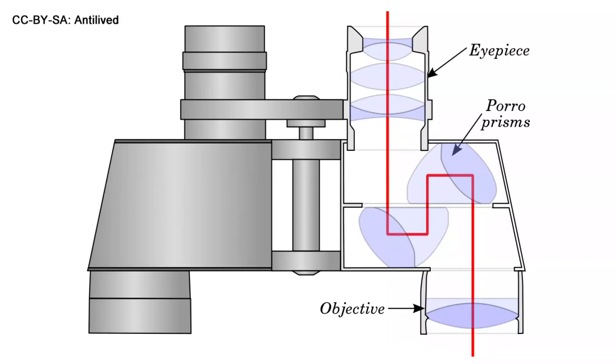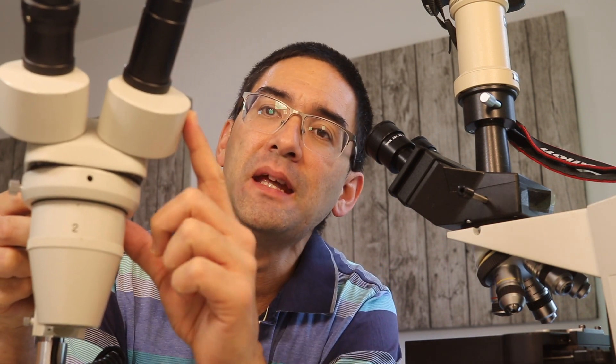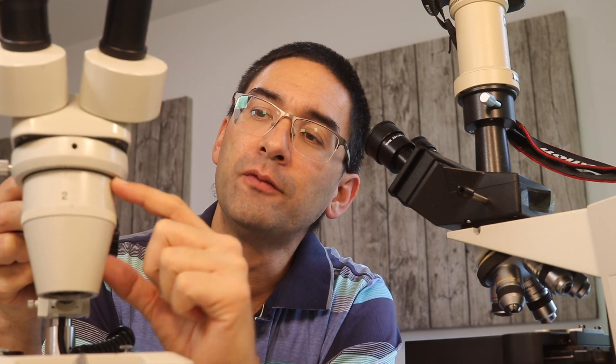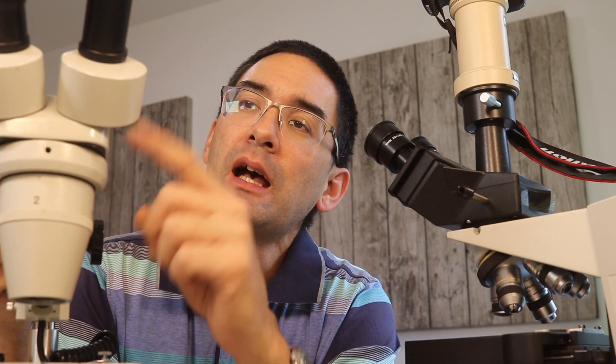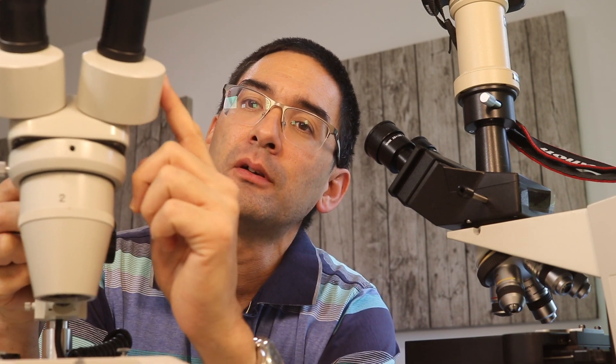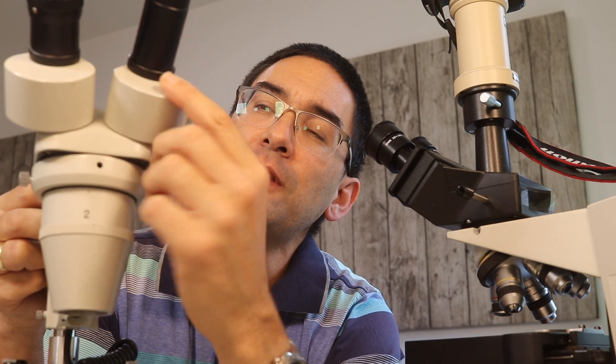These prisms here I got from binoculars. The principle is the same, but stereomicroscopes they depend on these prisms because what they do is they flip the image around. The objective of the microscope down here produces an inverted image and the prisms, so there's a pair of prisms in each one of those places here, they flip the image around.